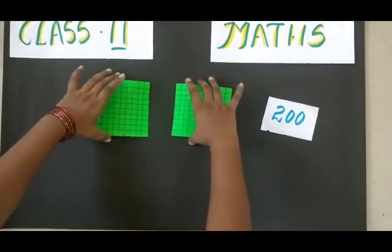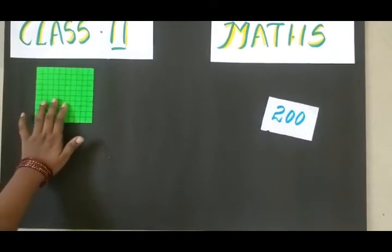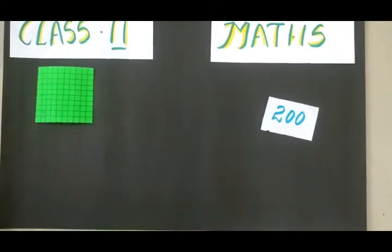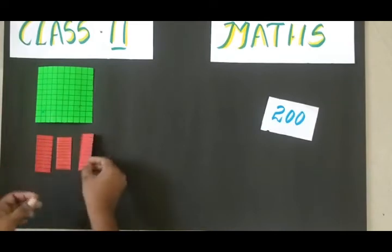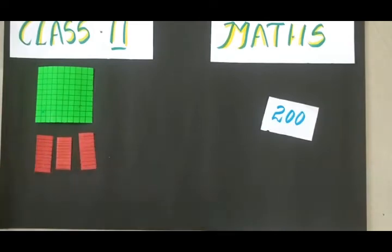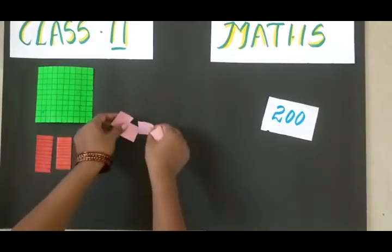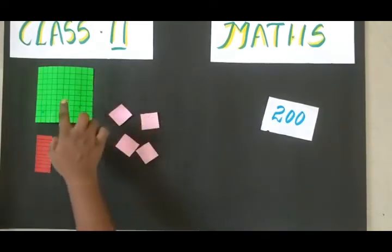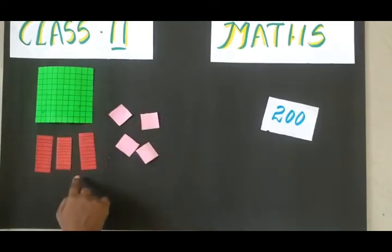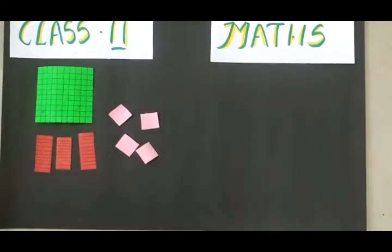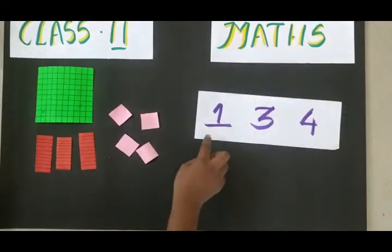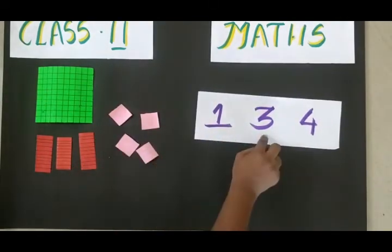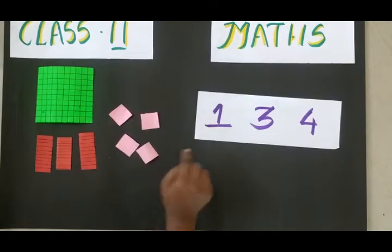Now I am going to represent some number and find the answer. I am placing one hundred, three tens, and four ones. Three tens are thirty, four ones. Can you find the answer for this? Yes — one hundred and thirty-four. One times hundred, three times tens, and four ones.